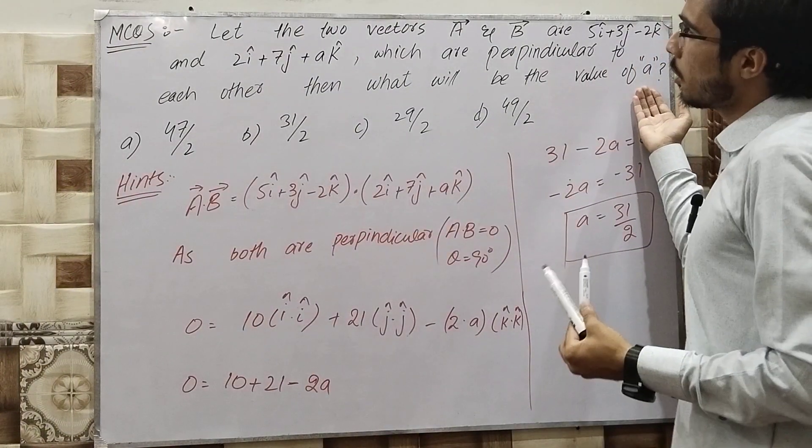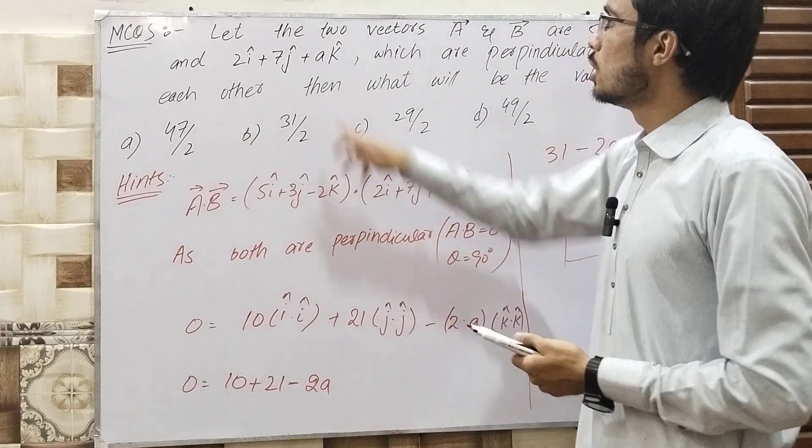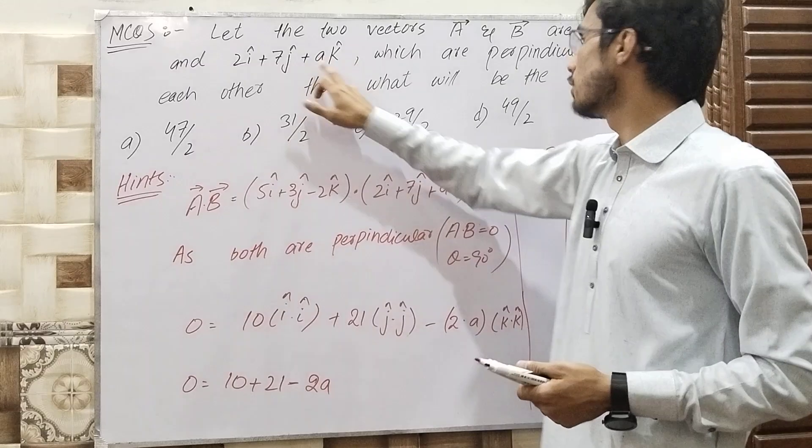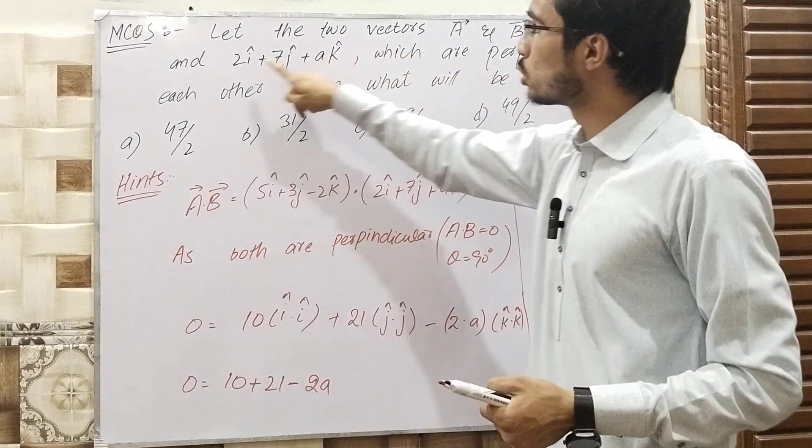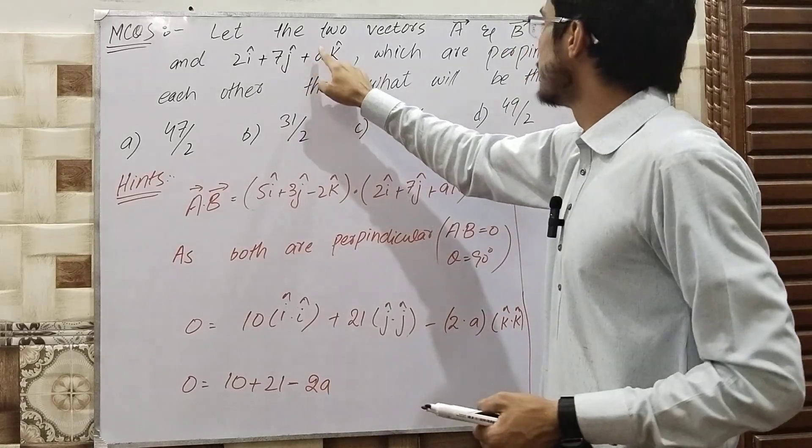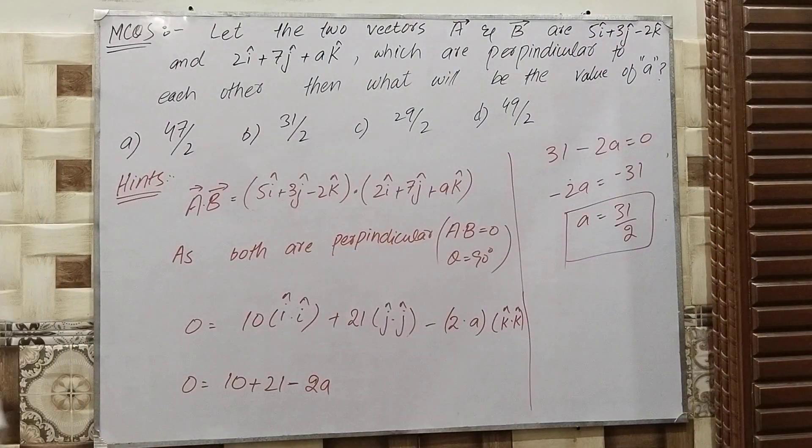Finding the value of a, we get 31/2. So the vector B = 2i + 7j + (31/2)k. Thank you so much for watching.